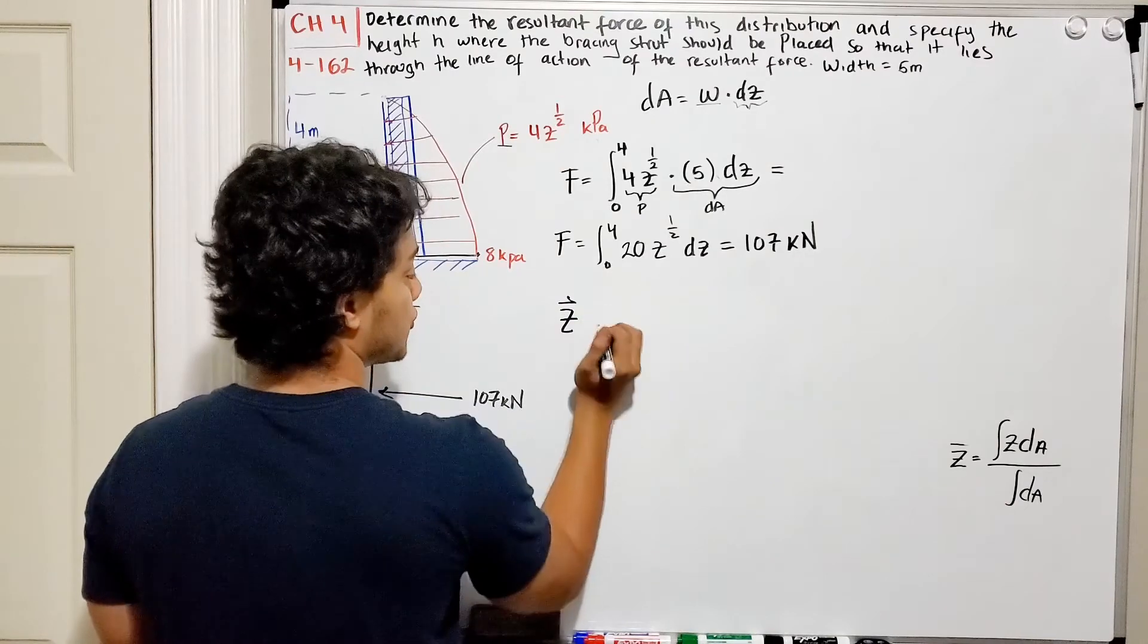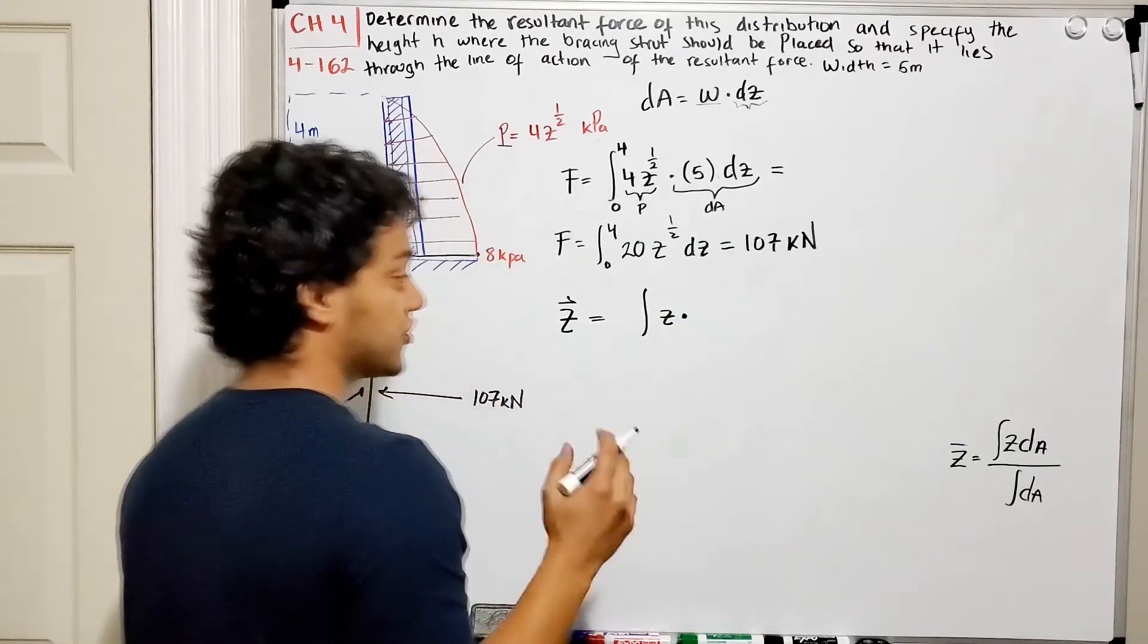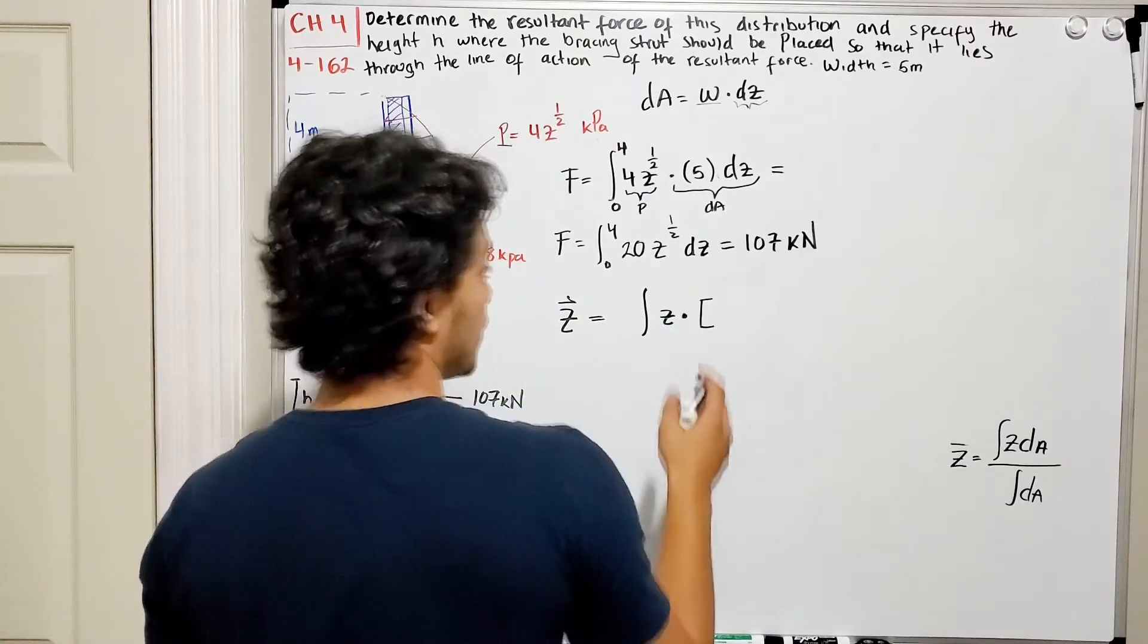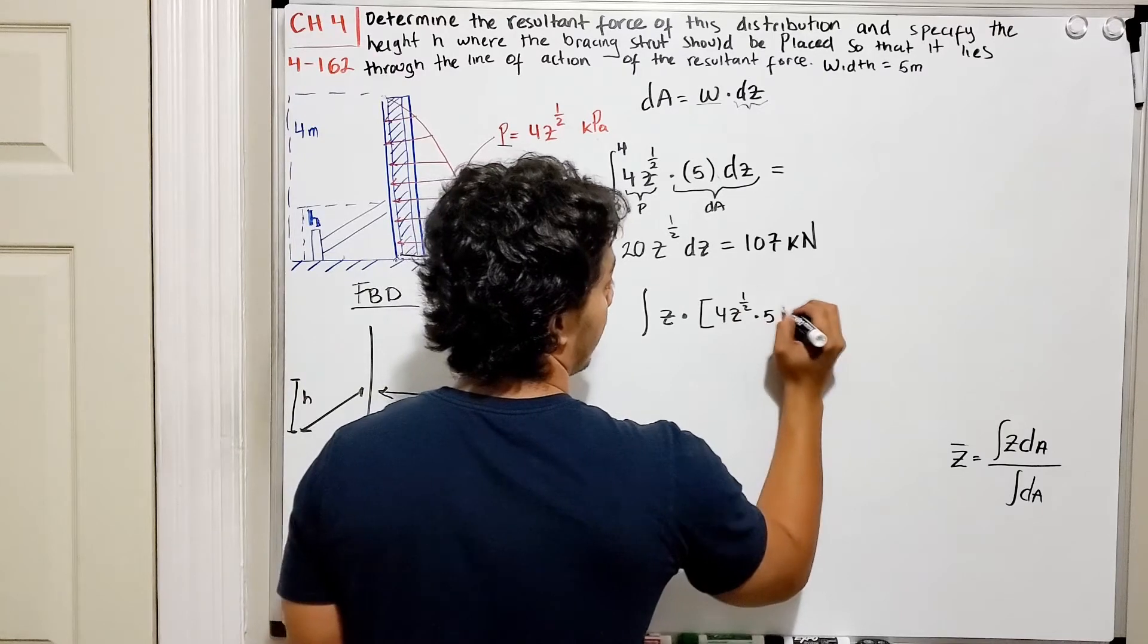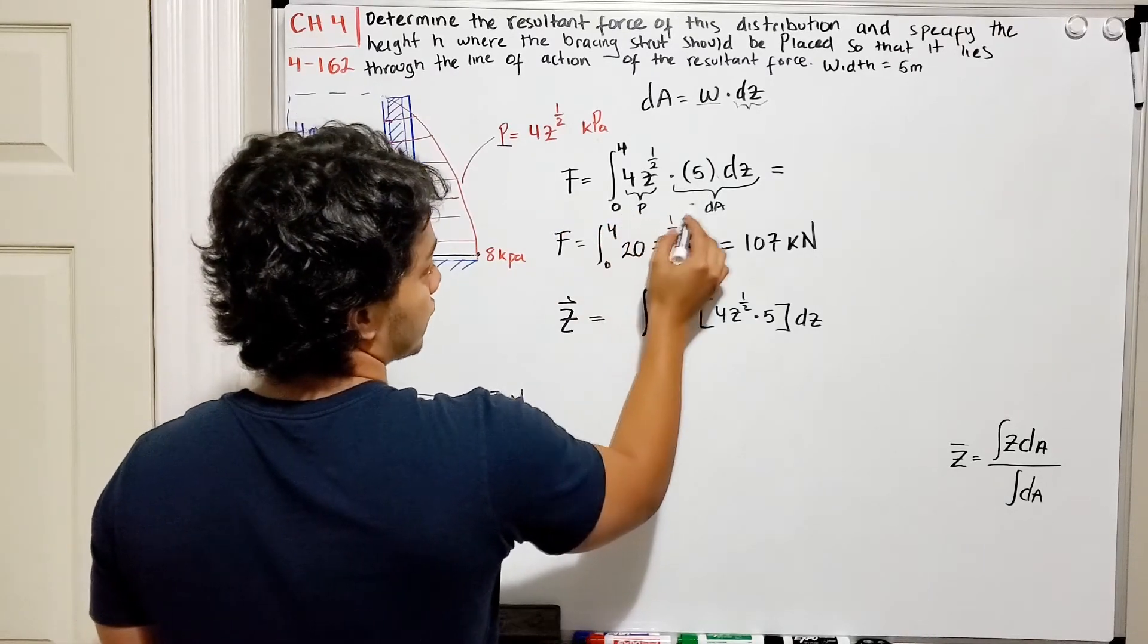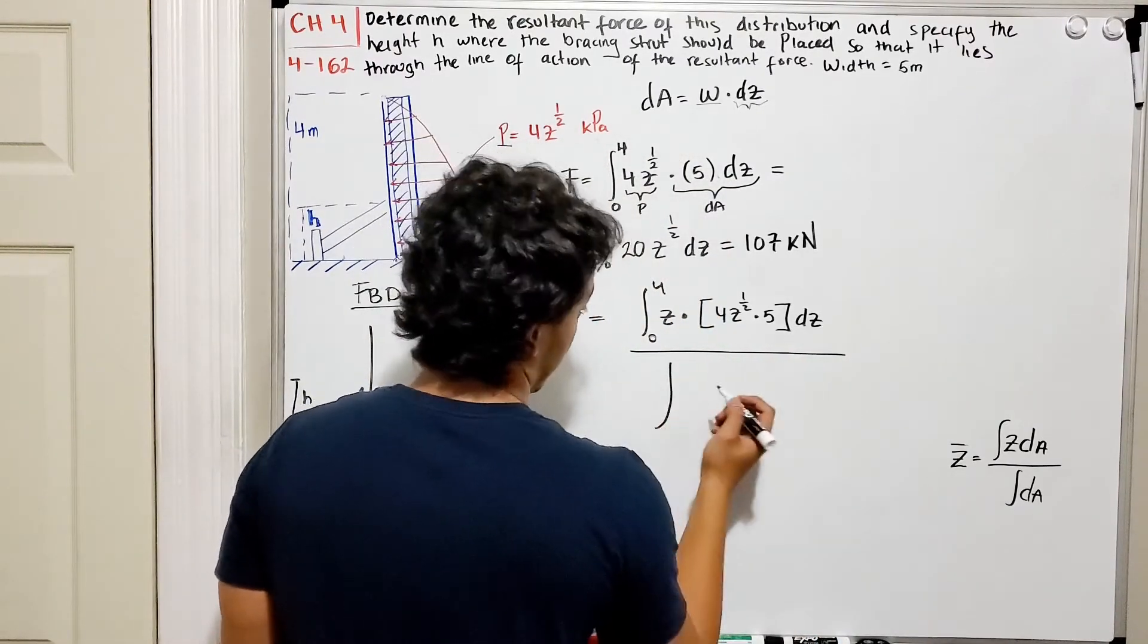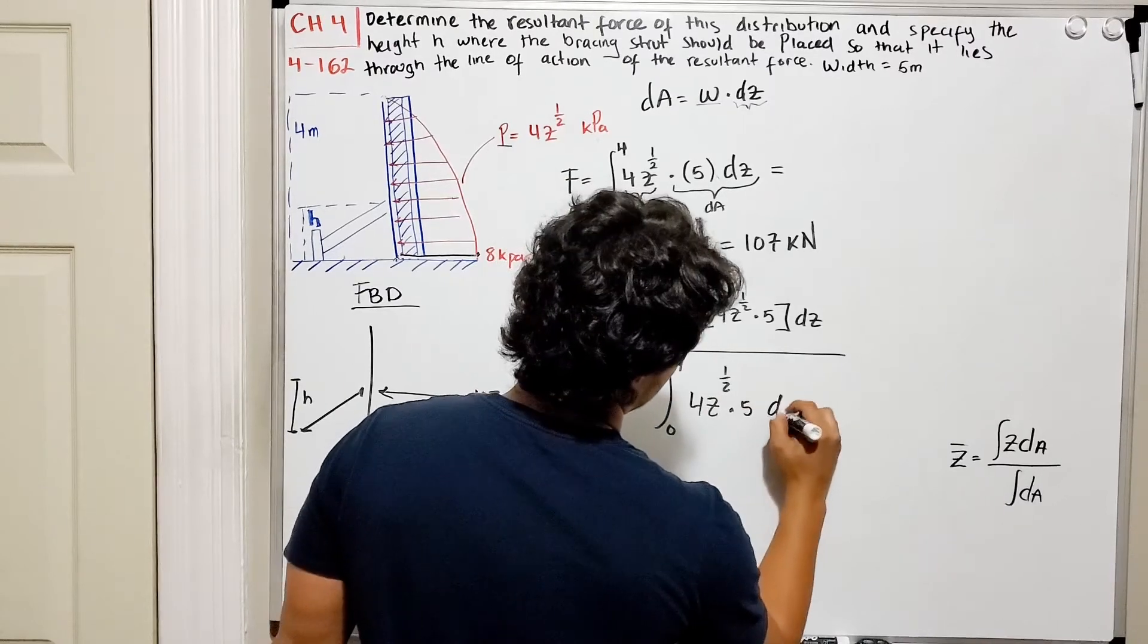My position Z or H is going to be the integral of Z multiplied by the change of this force with respect to the area. We already know what this force change with respect to the area is, which is 4Z to the 1 half, multiplied by 5, dZ, because this is the change of my force with respect to my area. This goes from 0 to 4, because we're talking about the change in Z, divided by 4Z to the 1 half, multiplied by 5, dZ. The difference between this one and this one on top is that we multiply by Z on top.